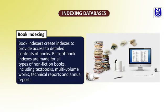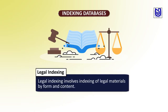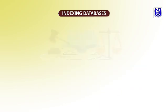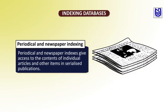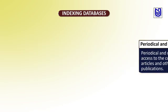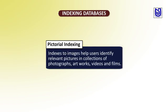Book indexes create indexes that provide access to the detailed content of books. Back-of-book indexes are made for all types of non-fiction books including textbooks, multi-volume works, technical reports, and annual reports. Legal indexing provides indexing of legal materials by form and content. Periodical and newspaper indexes give access to the contents of individual articles and other items in serial publications. Pictorial indexing uses indexes through images to help identify.